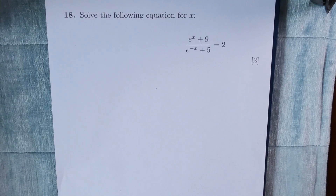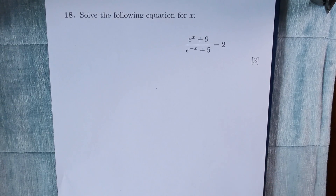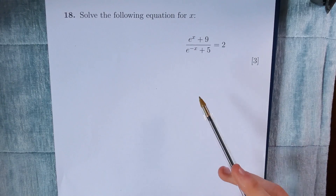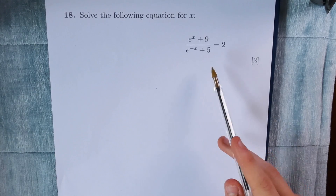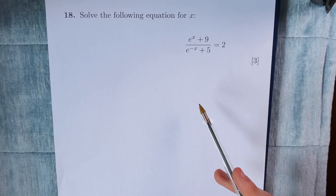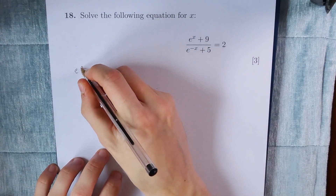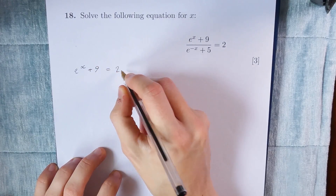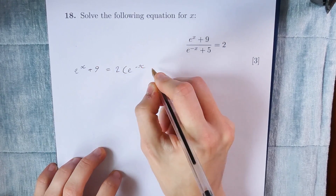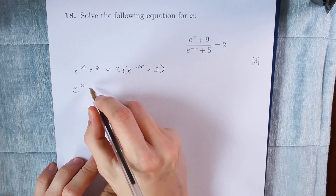Straight off in this question we can see it's quite a standard mathematical question, but the one word we need to see is 'solve,' so that immediately makes us think about solving a quadratic equation. Looking at what we've got here, the first thing I want to change is the fact that we have e to the minus x plus 5 as a denominator, which would make things quite messy to work with. So what we're first going to do is multiply both sides by e to the minus x plus 5, so that we can expand this and get it in a more linear form.